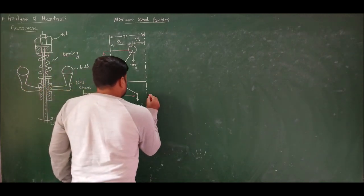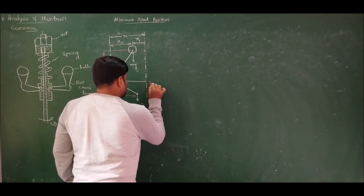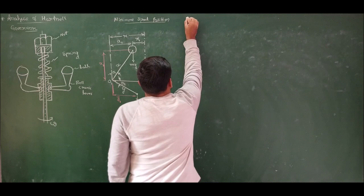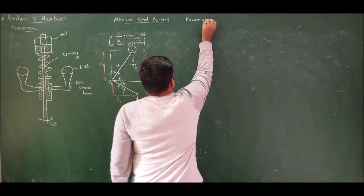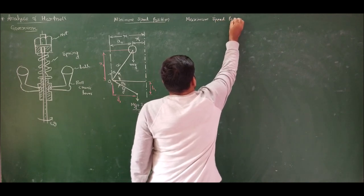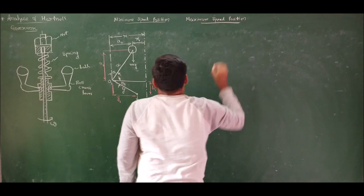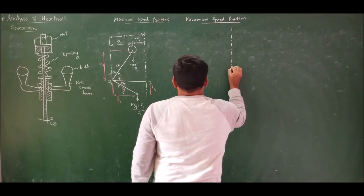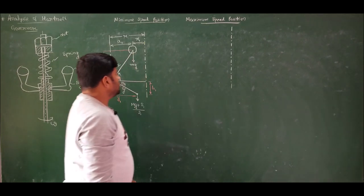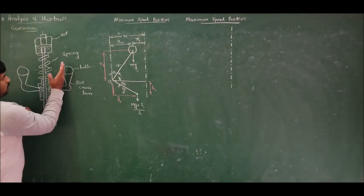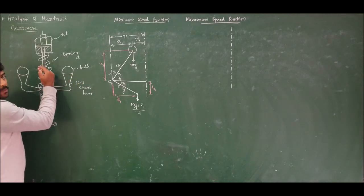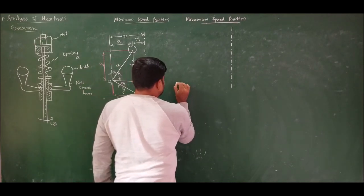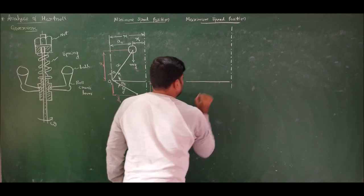h1 is the fall from the mean position. Next, for the maximum speed position, again I will take the axis of rotation. As I said, for maximum speed the balls will move away from the axis of rotation and the sleeve will move upwards. Let me take the mean position again and call this pivot O2.